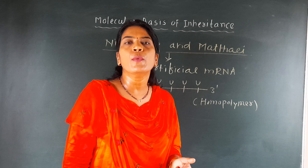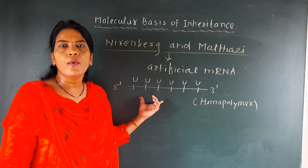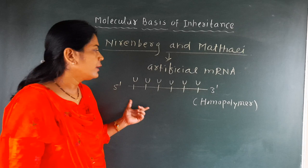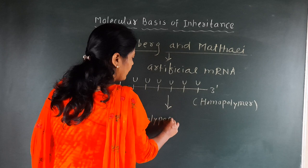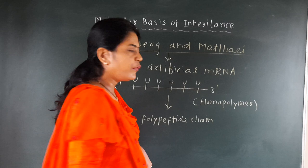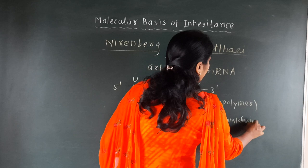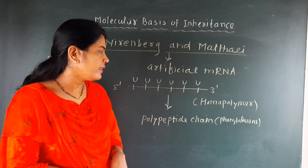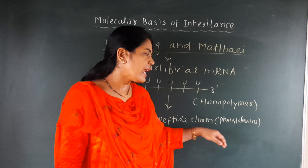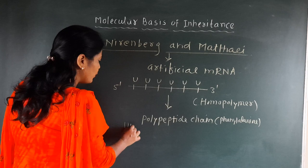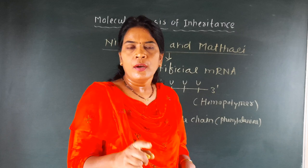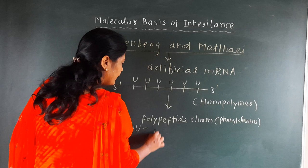This homopolymer proposed by Nirenberg and Mathai was prepared as artificial mRNA. That homopolymer later on formed the polypeptide chain, and in that polypeptide chain he linked different types of amino acids. The name of that amino acid is phenylalanine. Nirenberg and Mathai discovered that U-U-U, the sequence of three uracil bases in combination, forms the important amino acid phenylalanine.